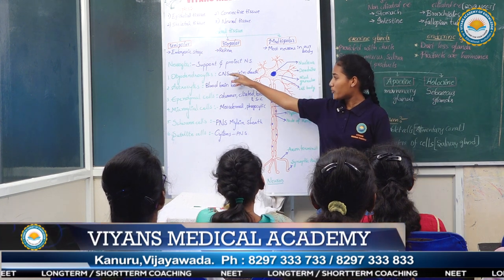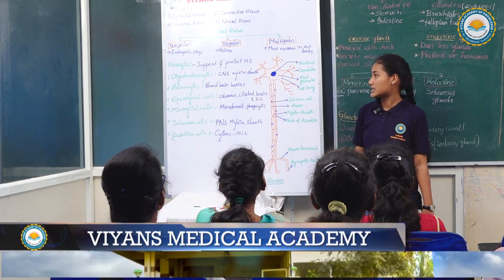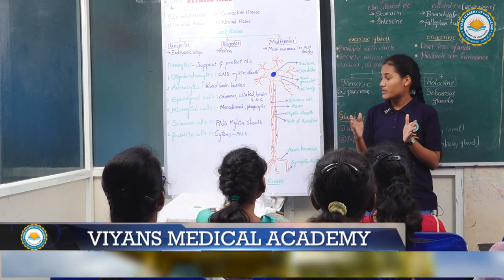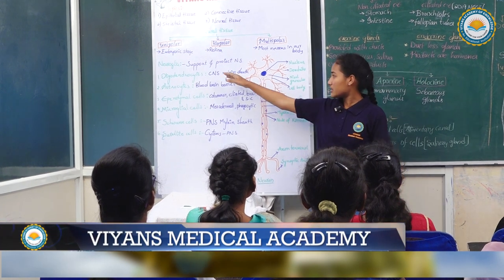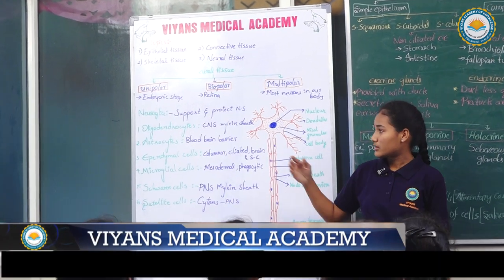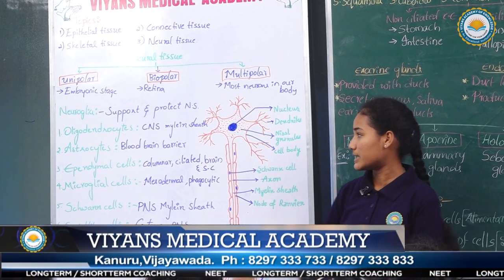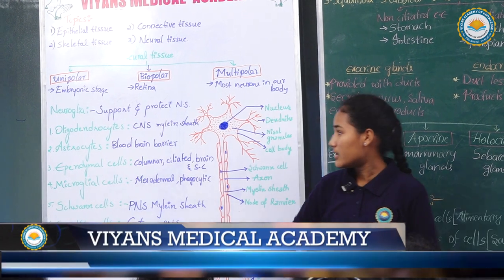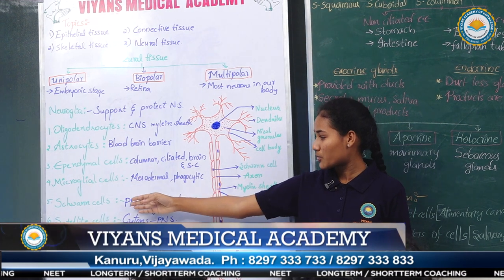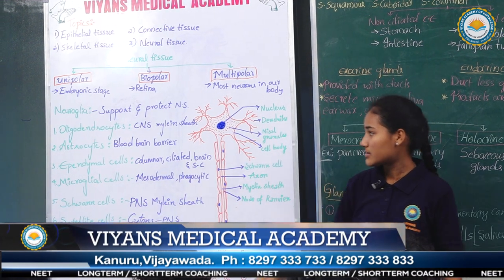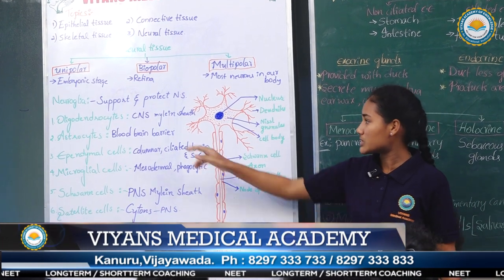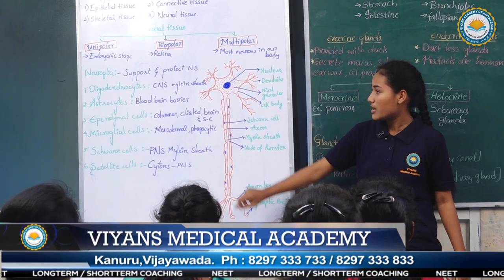The last important topic is neuroglial cells. These are non-impulse-conducting cells that divide throughout the life cycle and provide supportive structure, protecting the neural system. The neuroglial cells of the central nervous system contain six types of cells: oligodendrocytes, astrocytes, ependymal cells, microglial cells, Schwann cells, and satellite cells. Oligodendrocytes form the myelin sheath around many axons in the central nervous system.